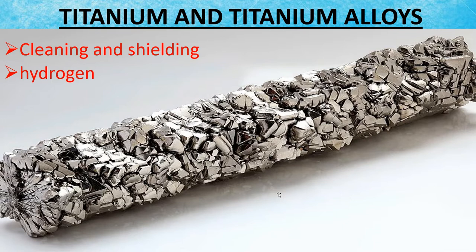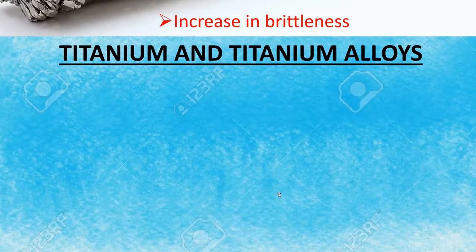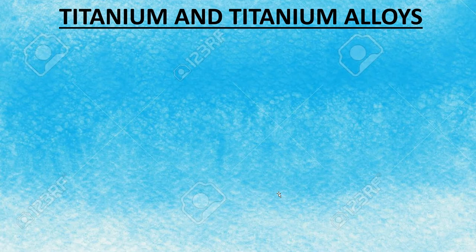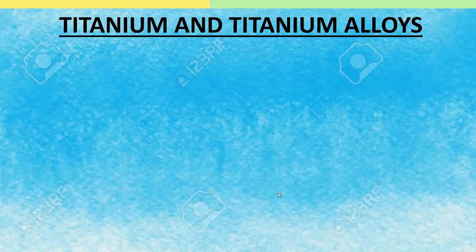Titanium is highly reactive with hydrogen, oxygen, and nitrogen gases, due to which the ductility of titanium is reduced and brittleness is increased. To avoid this increase in brittleness, casting processes for titanium are done in a vacuum. The casting processes used for producing titanium castings are investment mold casting and graphite mold casting.